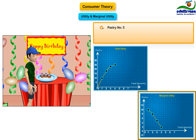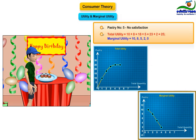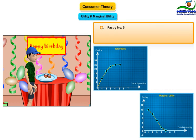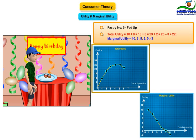Pastry number five did not make you any happier, so there is no incremental increase in satisfaction level. Total utility remained the same at 25, and marginal utility is zero. Pastry number six: you feel reluctant to eat more because you are fed up of it and you hate it by now. By eating it, you are actually decreasing your sense of happiness. Here, the marginal utility is negative — say minus 3 — due to which total utility now decreased to 22.